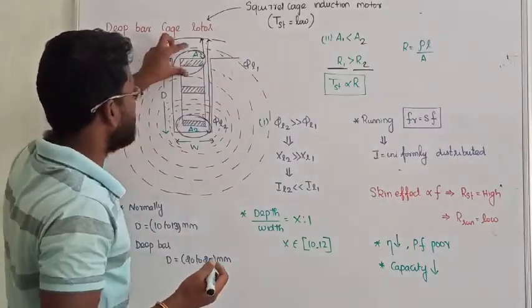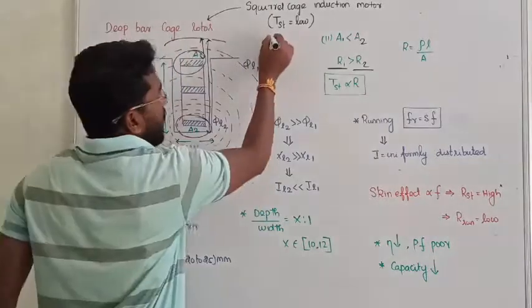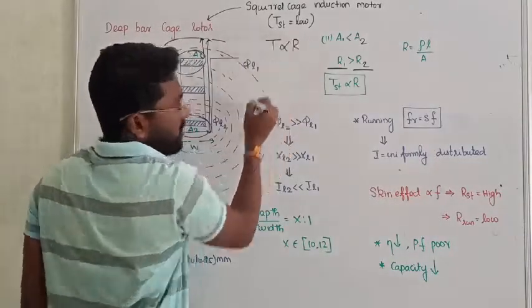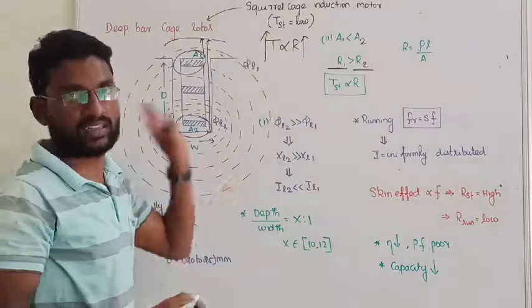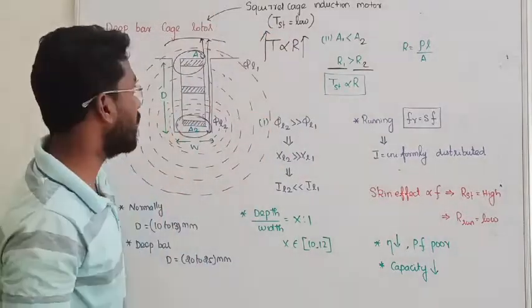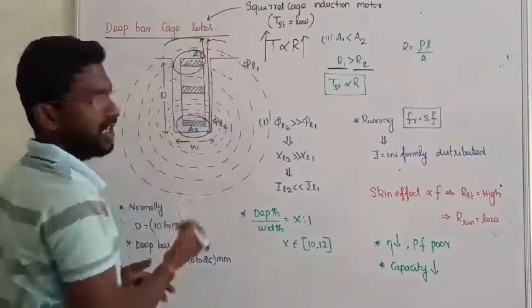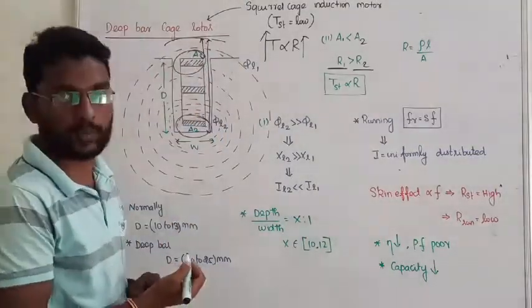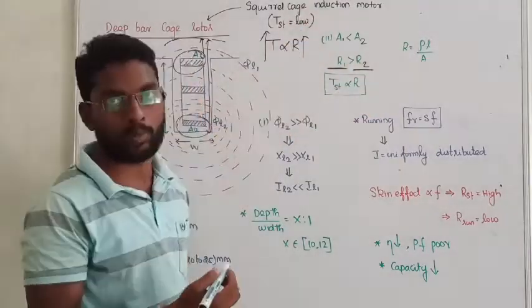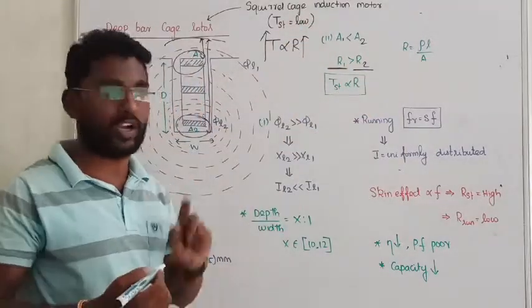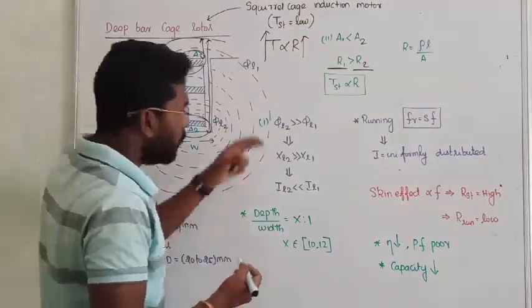Rotor resistance is increased. Starting torque is directly proportional to the resistance, so since the resistance is increasing, starting torque is increasing. That is how we are improving the starting torque with the help of deep bar cage rotor. So depth is increased, resistance at the outer area will change, so that starting torque will be effectively improved.